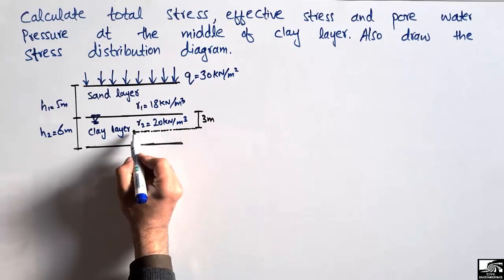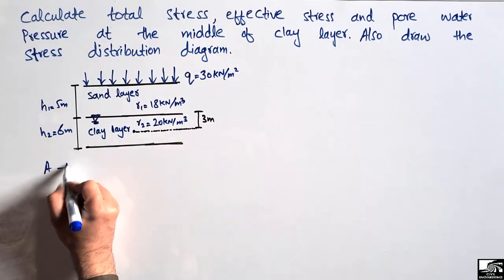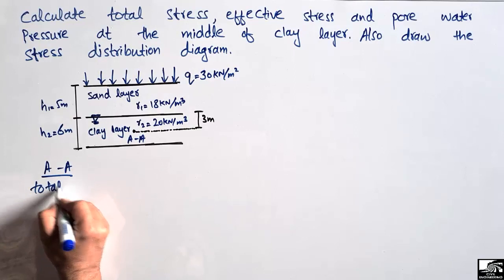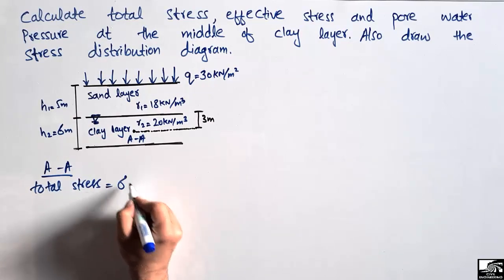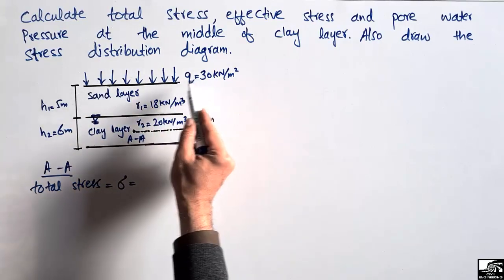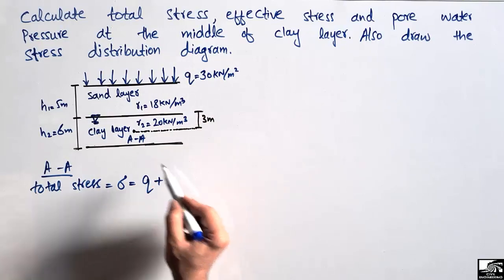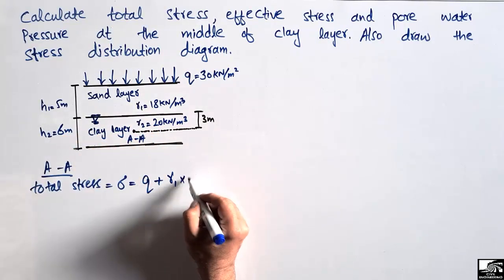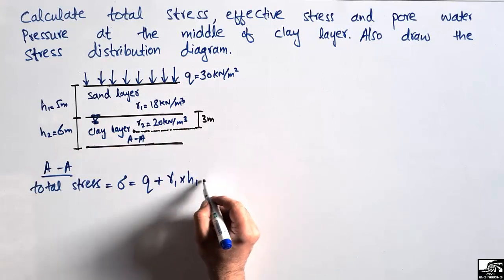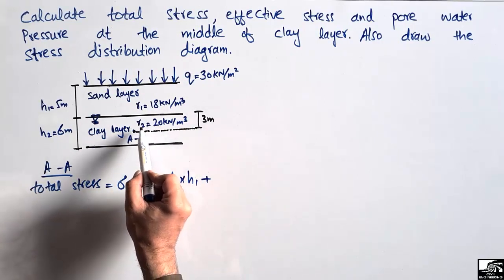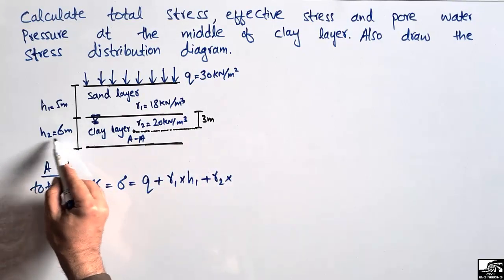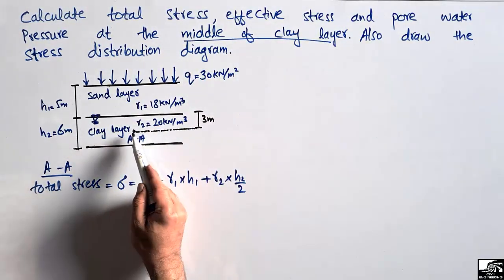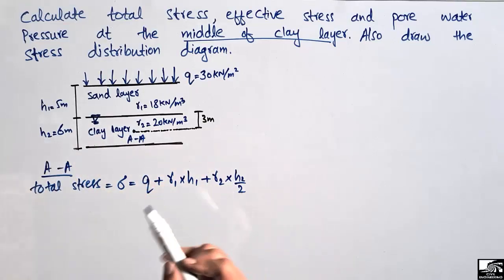Let's consider section A-A as the section where we want to find the stresses. The total stress sigma will be equal to the total load acting on top of the sand layer Q, plus the load from the sand layer — gamma 1 multiplied by h1 — plus the contribution from the clay layer — gamma 2 multiplied by h2 divided by 2, since we are at the middle of the clay layer.